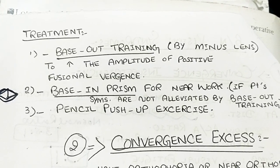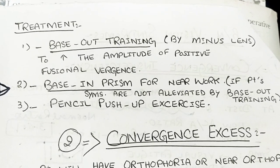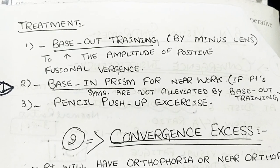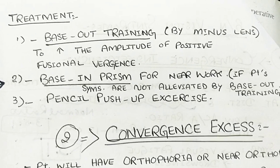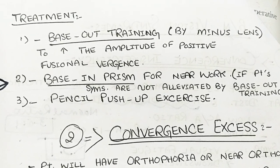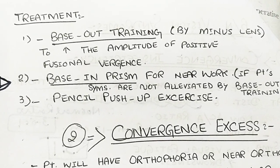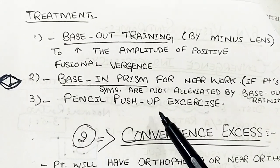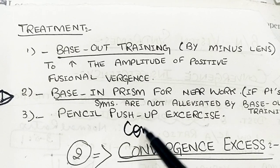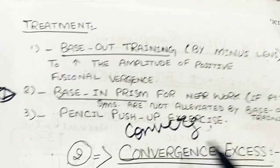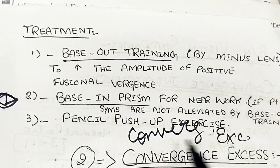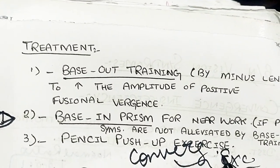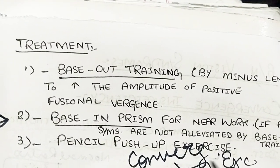Convergence insufficiency is also treated by base-out training — that is, by using minus lenses to induce exercise especially at near. We induce accommodation and the accompanying accommodative convergence, relieving convergence insufficiency through this exercise method. Another exercise is the pencil push-up exercise, which is a convergence exercise we guide patients to perform.